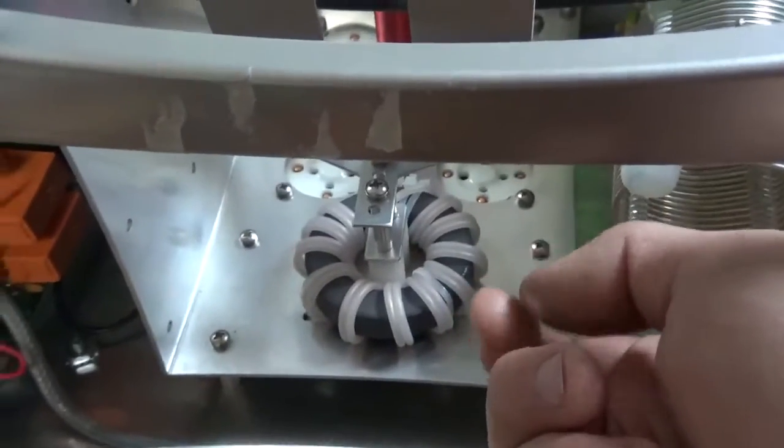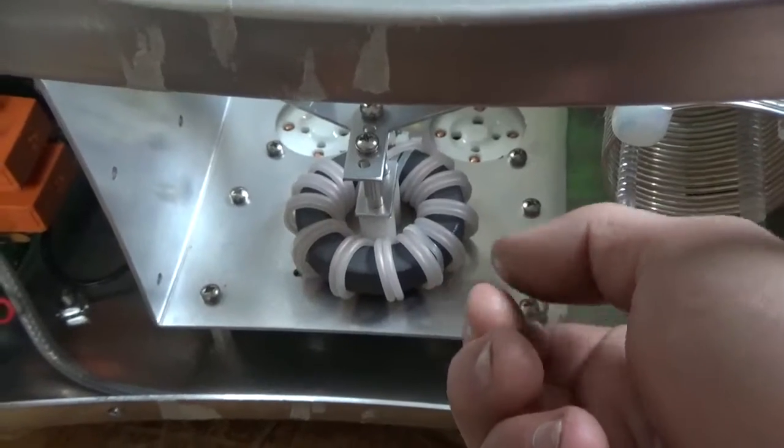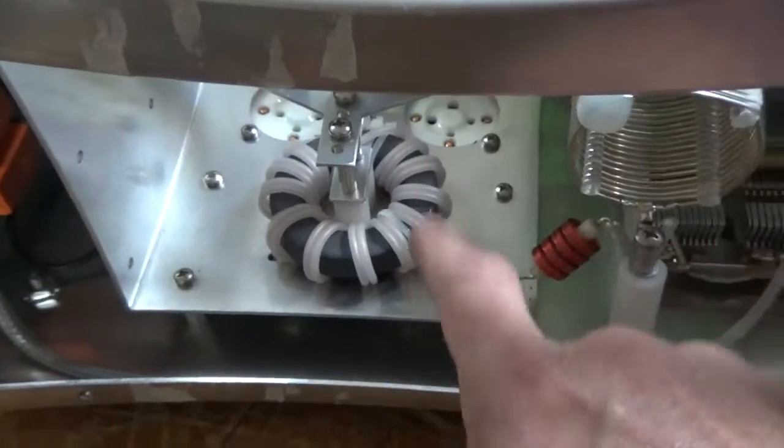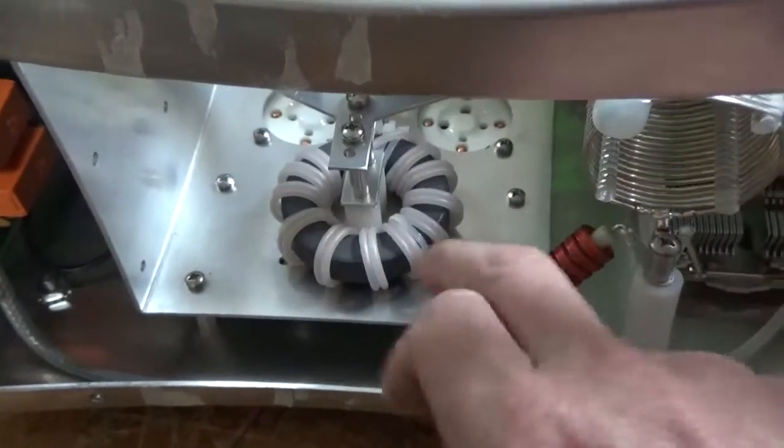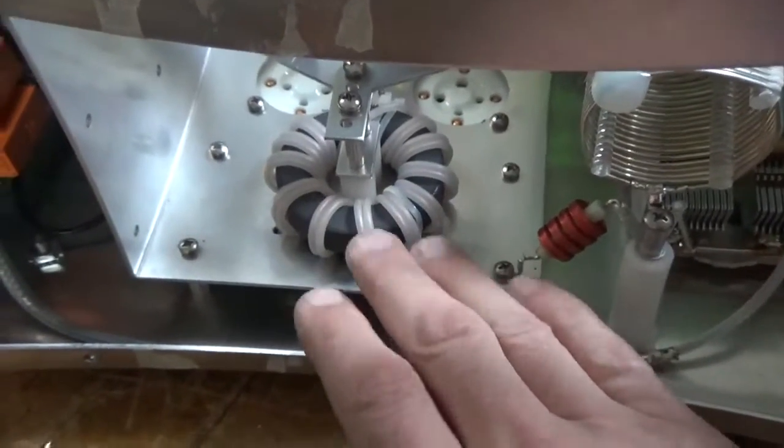So a lot of times the fiber washer, well, first off, a lot of times from the factory, they're loose. And then second, the fiber washer shrinks over time, and then the nut becomes loose.